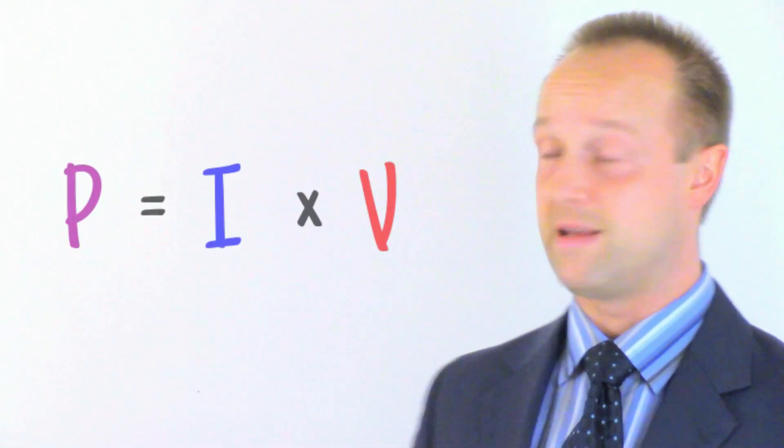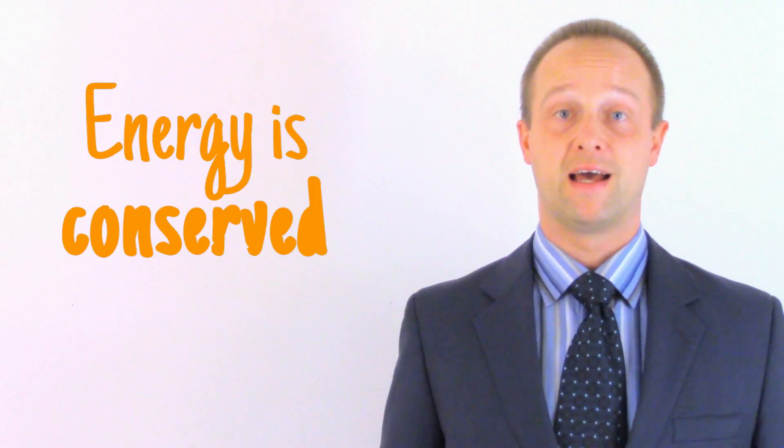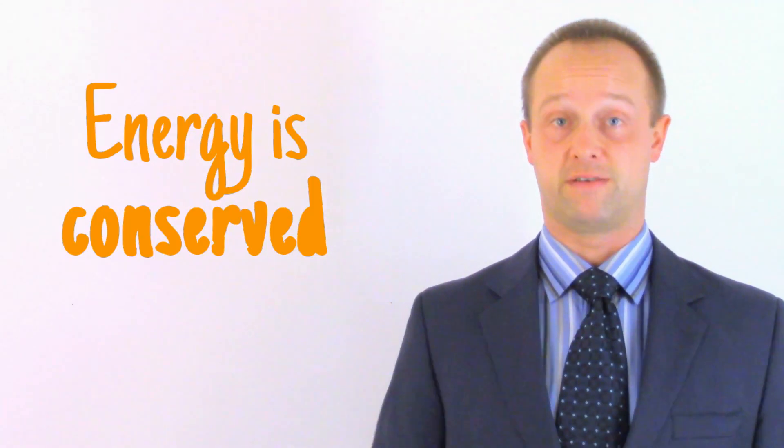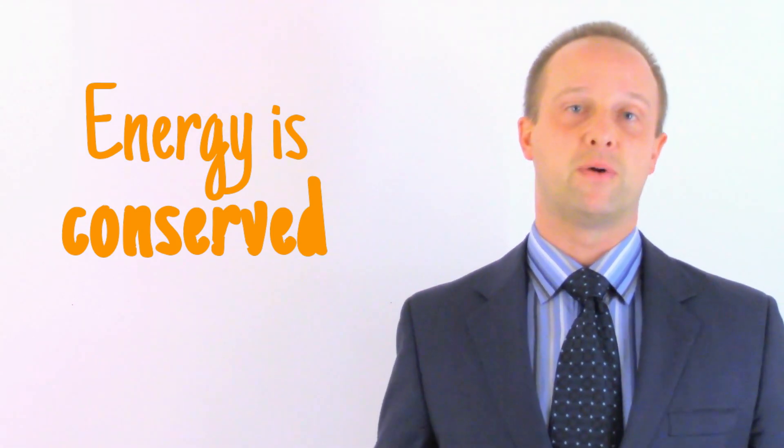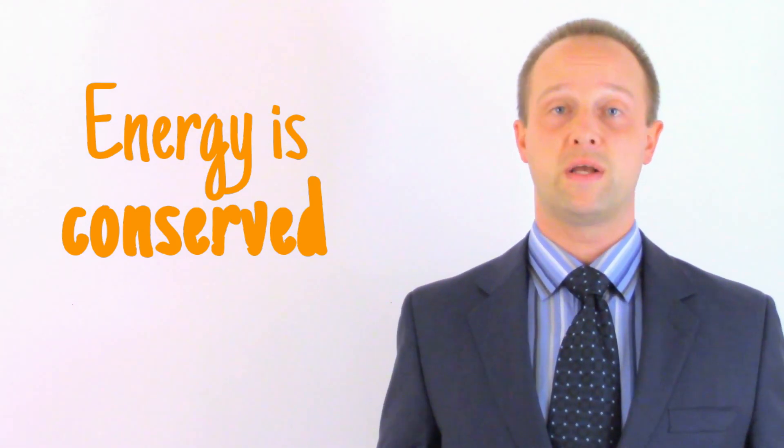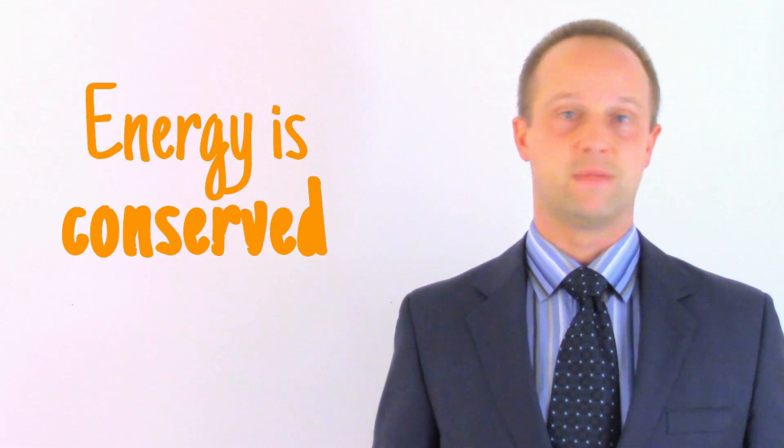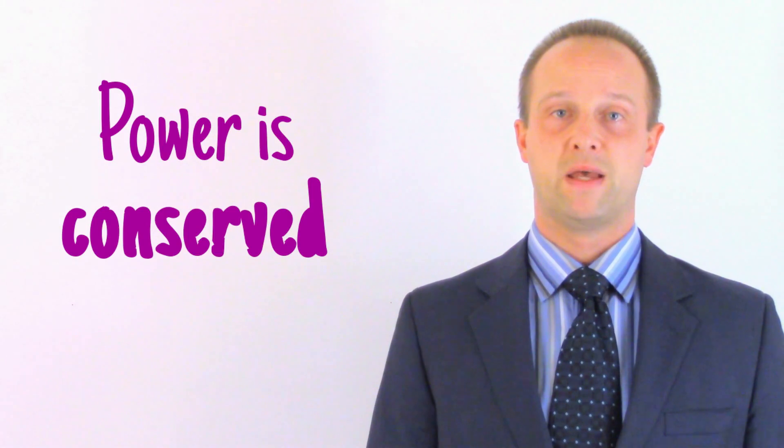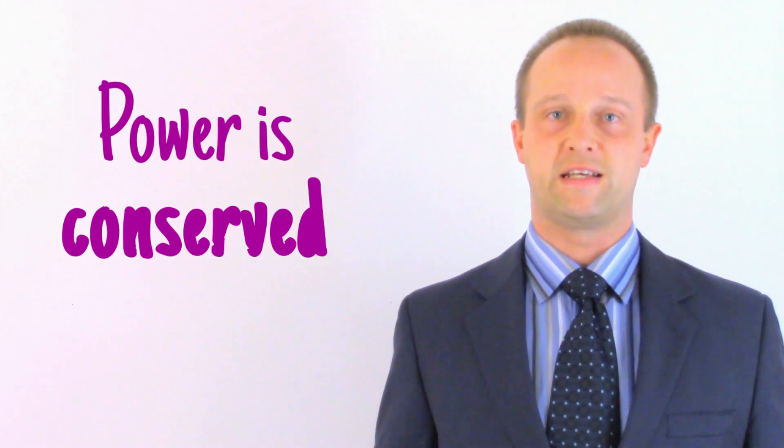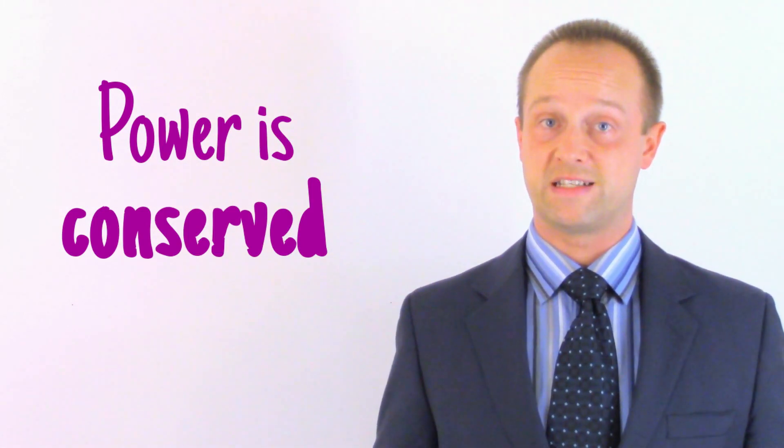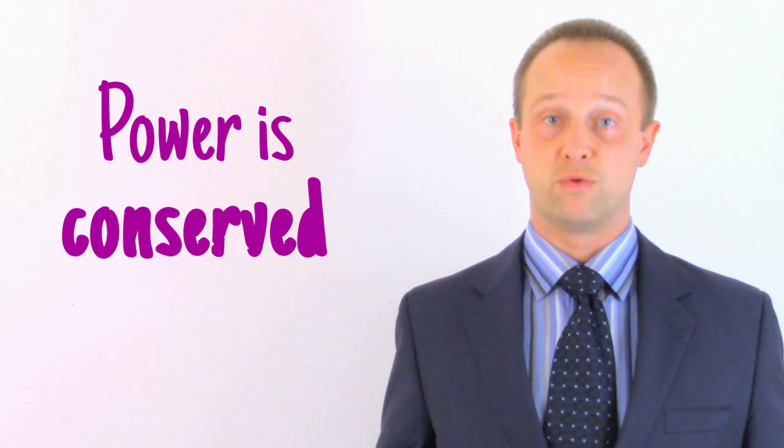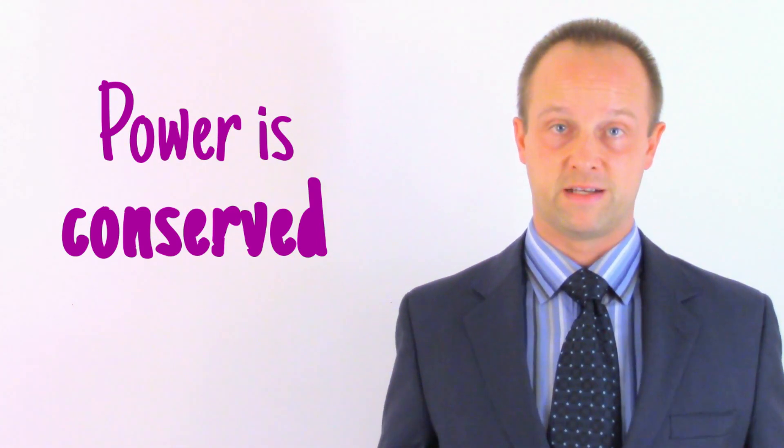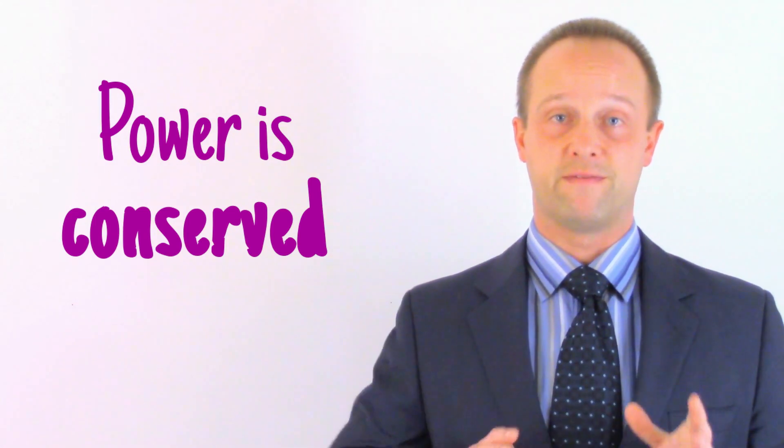Well, it comes back to P equals IV. Energy is conserved. You get the same amount of energy out of a system as you put into a system. All that we can do is change the type of energy. Power is just energy per second, and so power is conserved as well. If we put 360 gigawatts, that is 360 billion watts, into our system, we're going to get 360 gigawatts back out of it. Maybe not all of it is going to be in the form we want, but every single one of those watts of power will be released in one way or another.